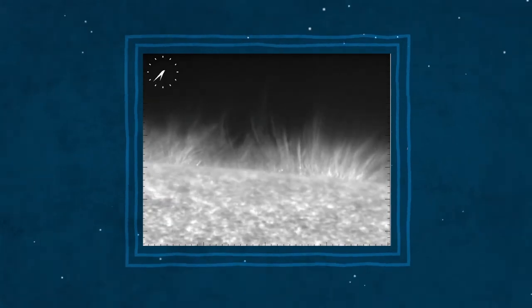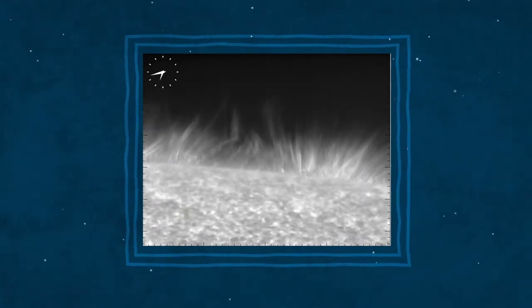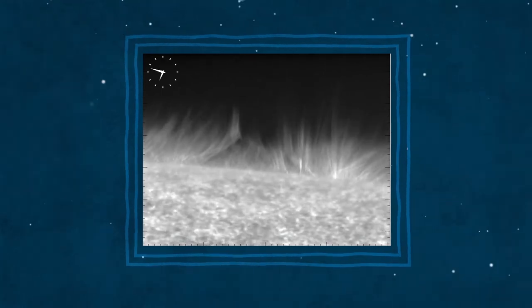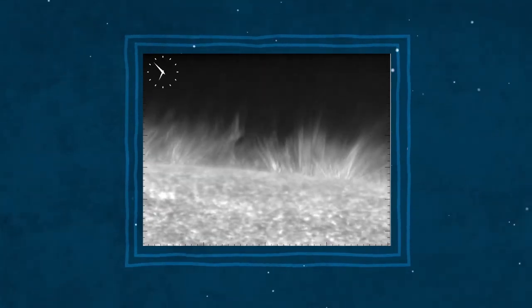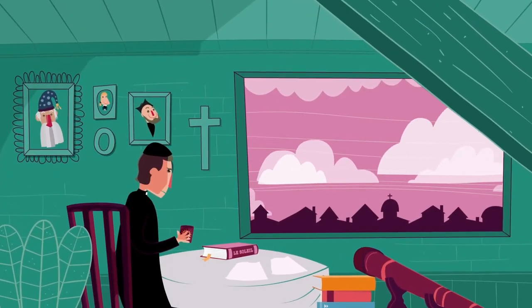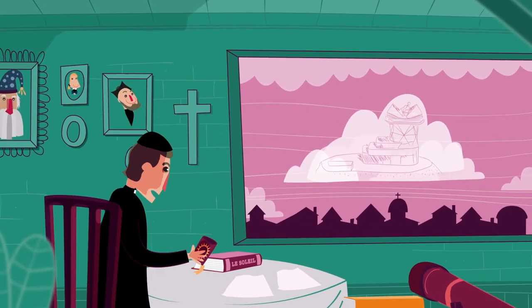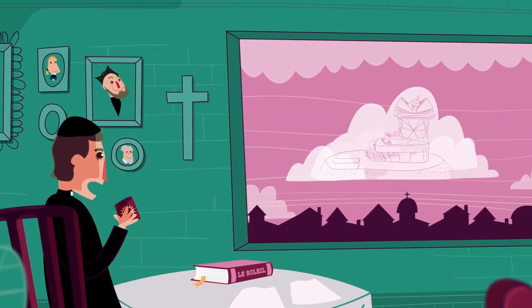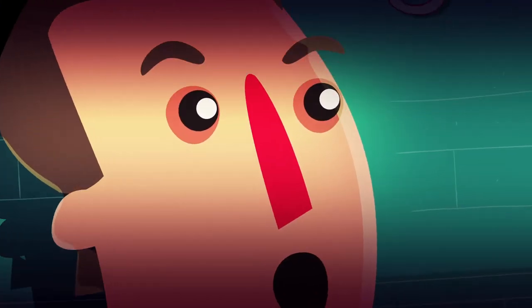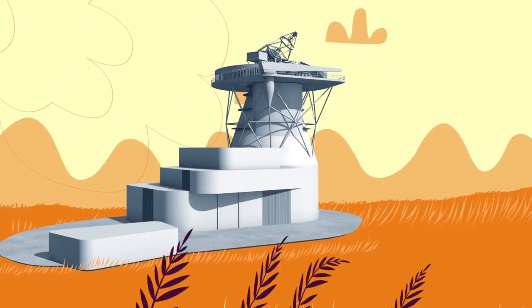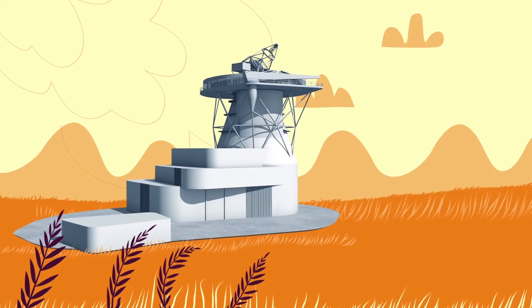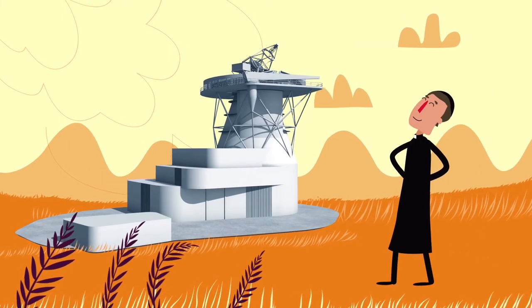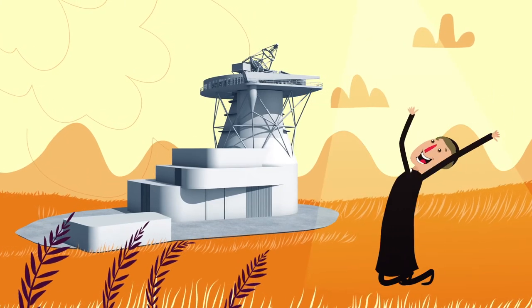Sin embargo, los astrónomos sospechan que las espículas son capaces de transportar mucha energía y, como resultado, calientan la corona. Para comprobarlo, se necesitan instrumentos capaces de medir el campo magnético de las espículas antes de que desaparezcan. El Telescopio Solar Europeo nos permitirá entender las espículas y cómo calientan la atmósfera solar.